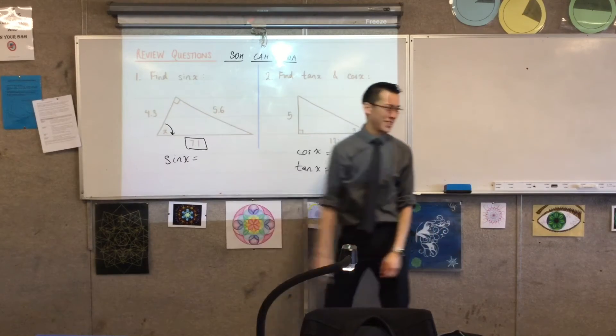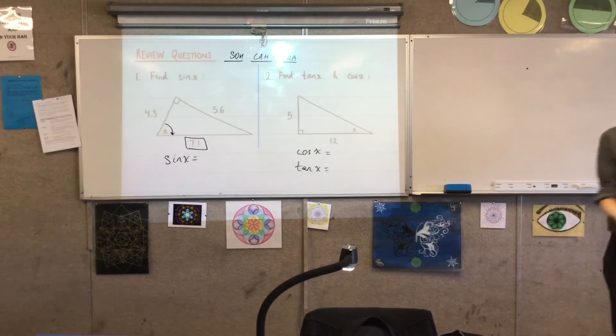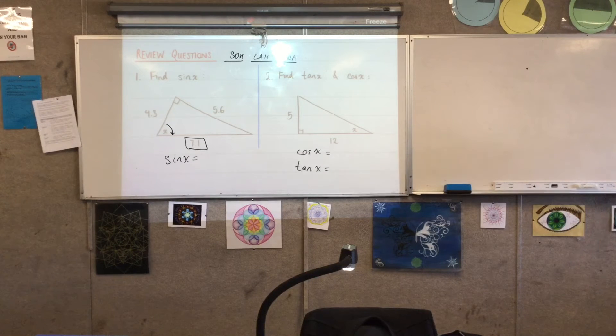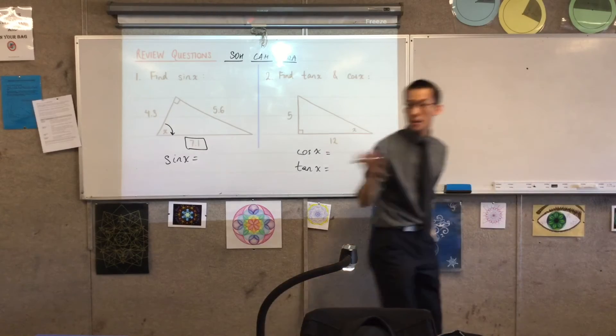Sometimes mean teachers will put the right angle in a funny spot, so pay attention. That's one way of knowing. What's the other way of knowing? Which one's the hypotenuse? It must be the longest side.